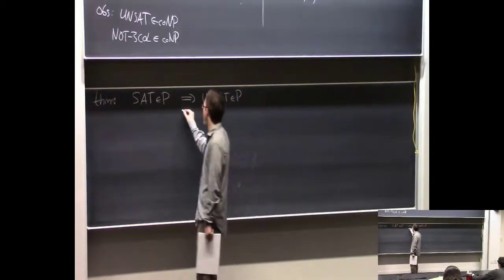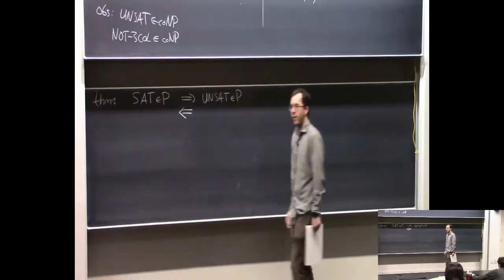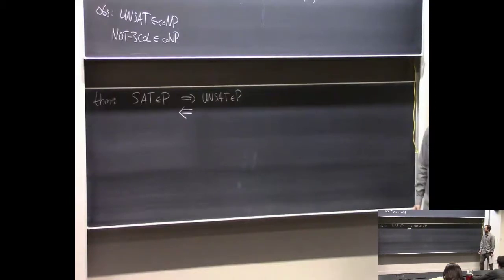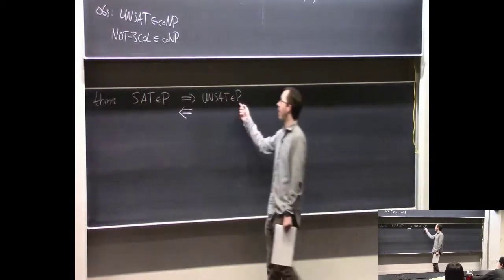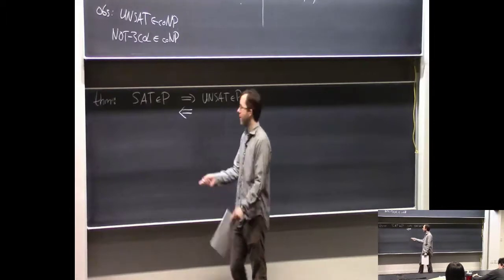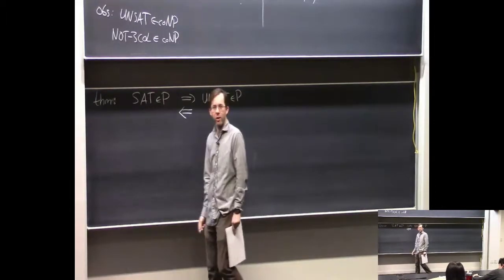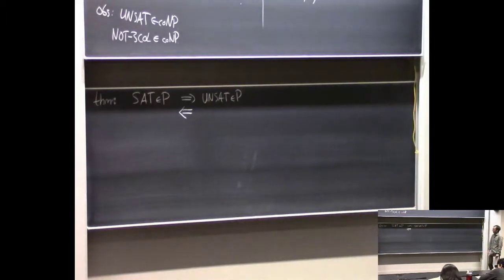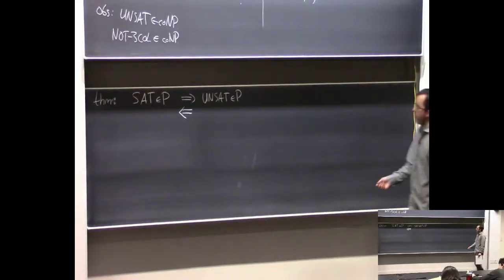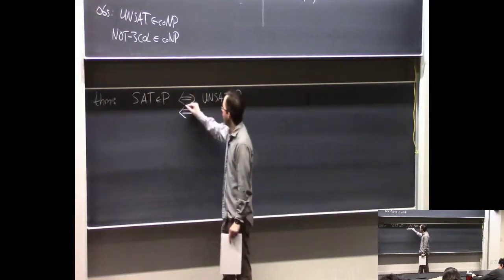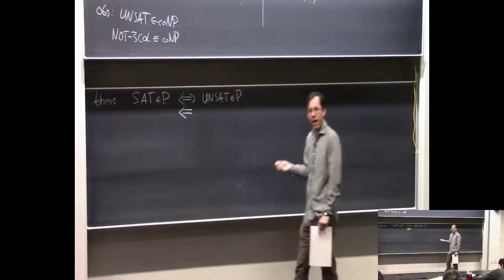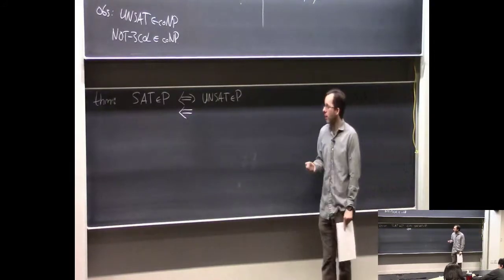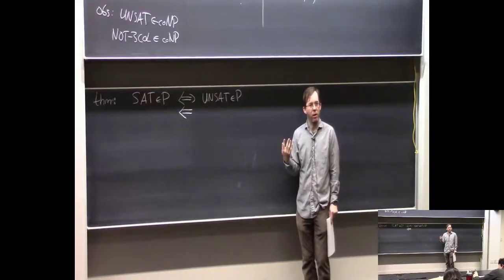This is also true: if UNSAT is in P, then SAT is in P. It's the same proof. If you have an algorithm that solves UNSAT, just take that algorithm and reverse its answer, and the resulting algorithm solves SAT in the same amount of time. So these two problems have the same complexity in some sense. Whether one is solvable in polynomial time is the same as asking whether the other is.